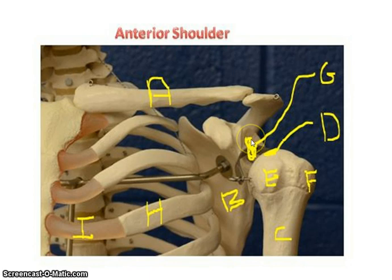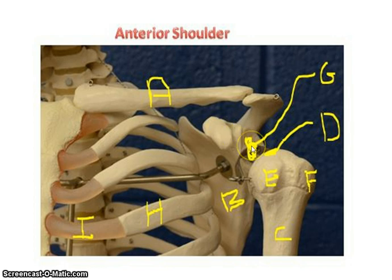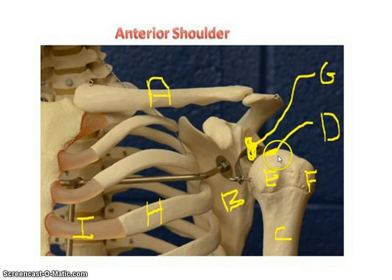Notice the glenoid cavity isn't very deep, so your shoulder is one of your most flexible or mobile joints, but it's also one of your most unstable joints. The reason it is unstable is because this glenoid cavity isn't very deep, and so that head of the humerus doesn't go deep into a socket, which makes it more unstable.